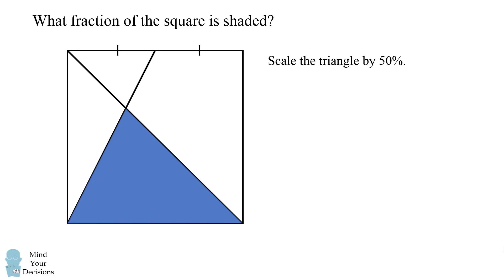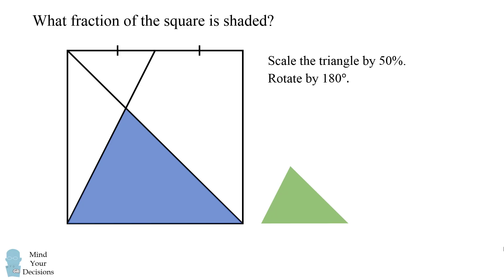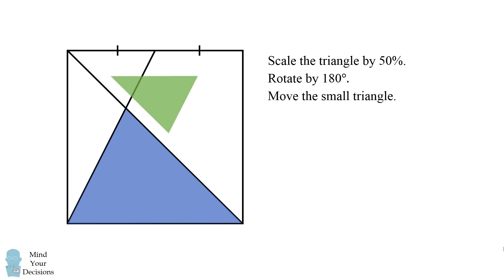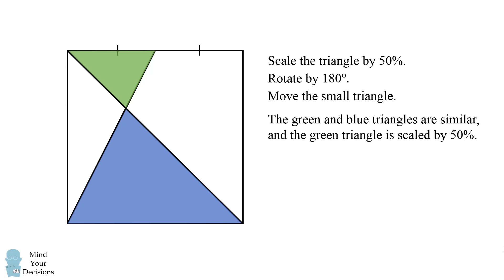First, let's scale this blue triangle by 50%. Next, rotate the green triangle by 180 degrees. Then move the small triangle. What this shows is that the green and blue triangles are similar, and the green triangle is scaled by 50%. Let's prove this.